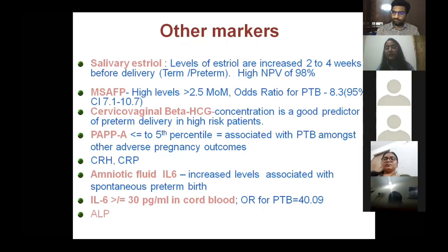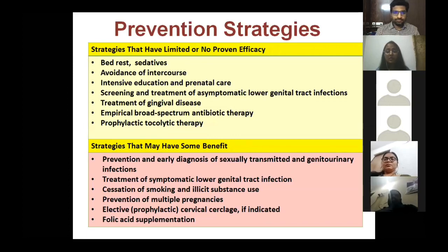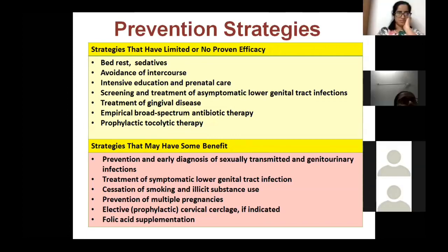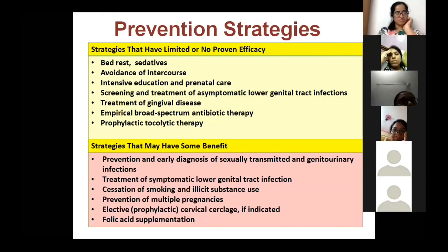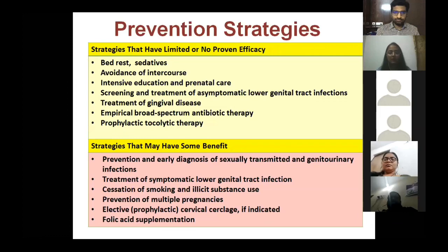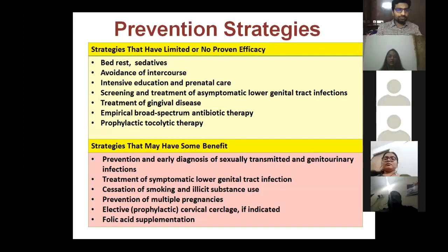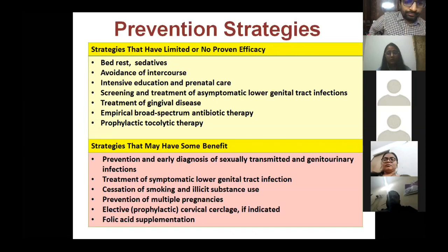Prevention strategies with no or limited proven efficacy include bed rest, sedatives such as tramadol, avoidance of intercourse, and empirical broad-spectrum antibiotics — none of these should be given routinely. Prophylactic tocolytic therapy is also not indicated. Strategies with some benefit include treating diagnosed sexually transmitted or lower genital tract infections, smoking cessation, prevention of multiple pregnancies through fetal reduction, elective cervical cerclage, and folic acid supplementation.